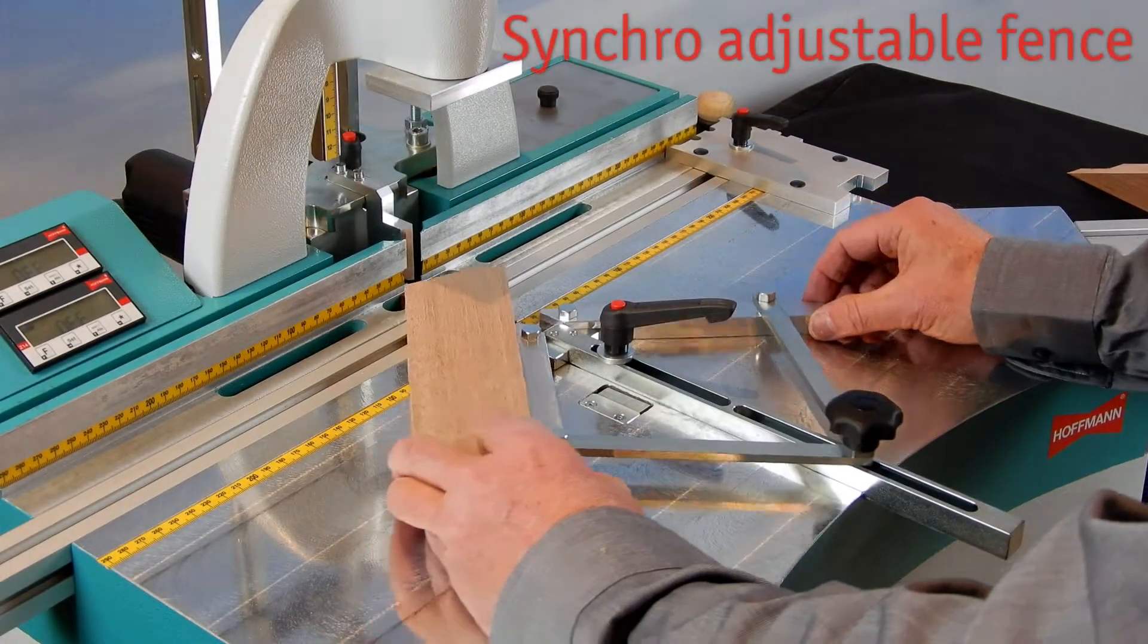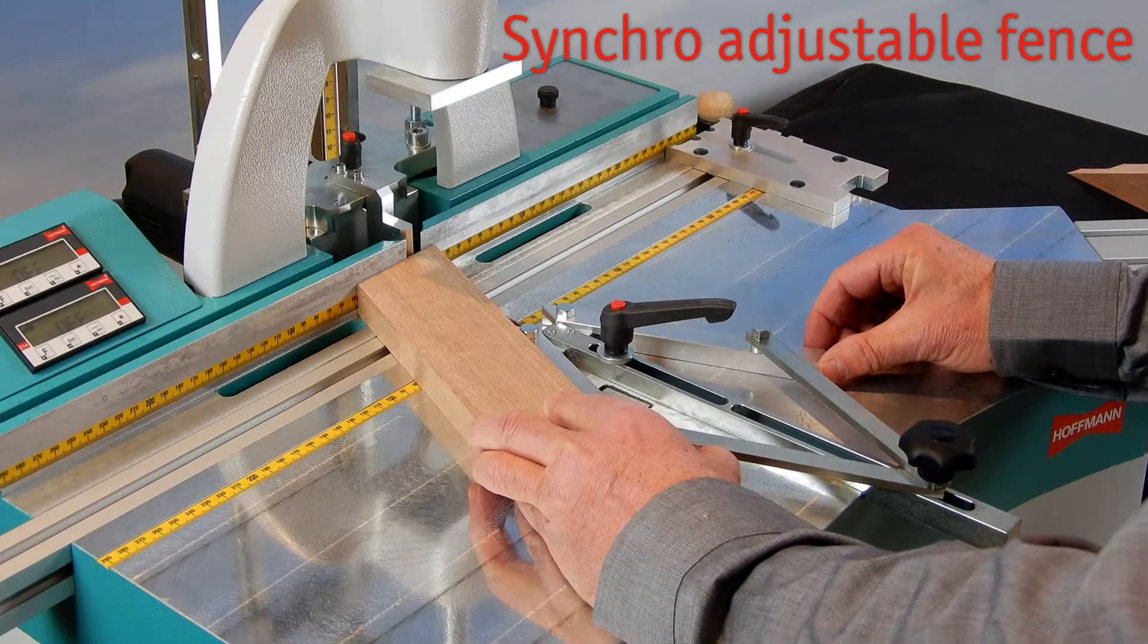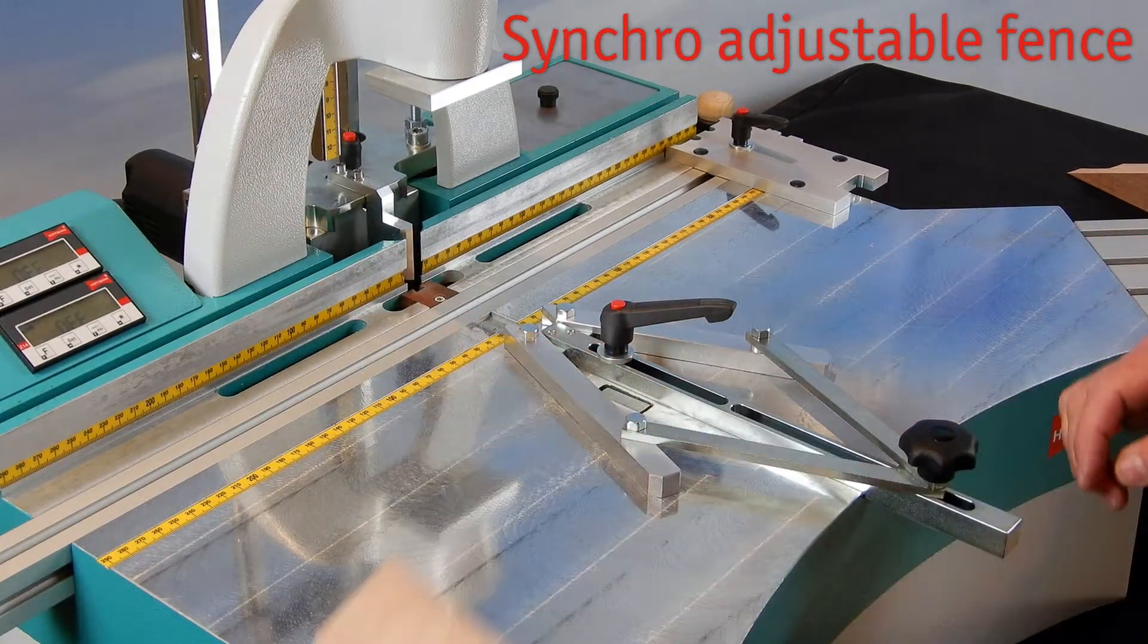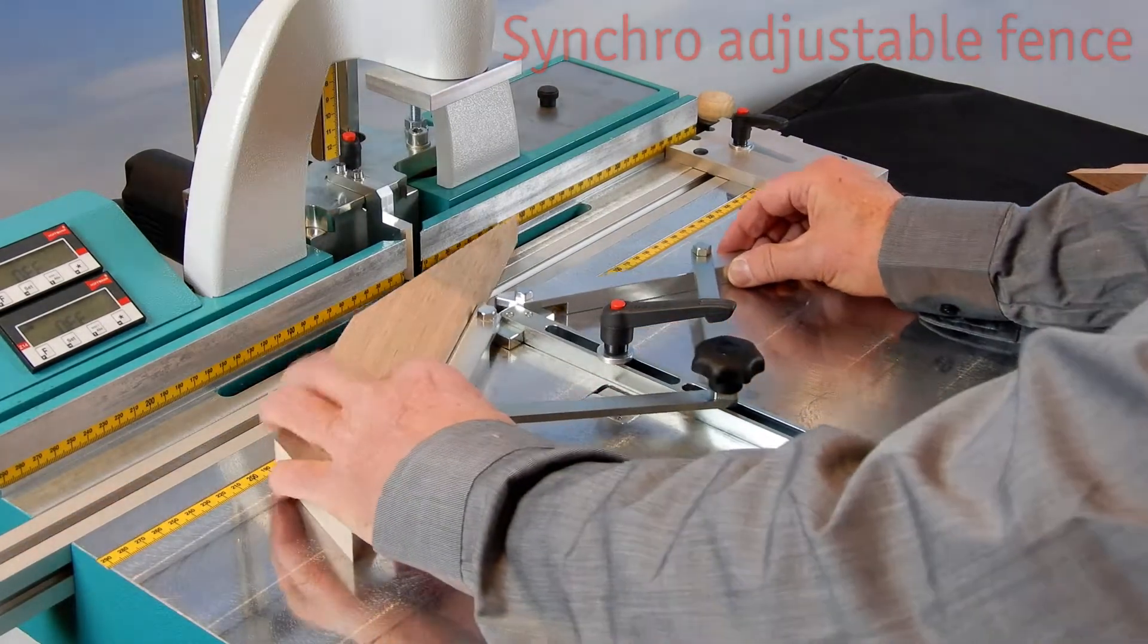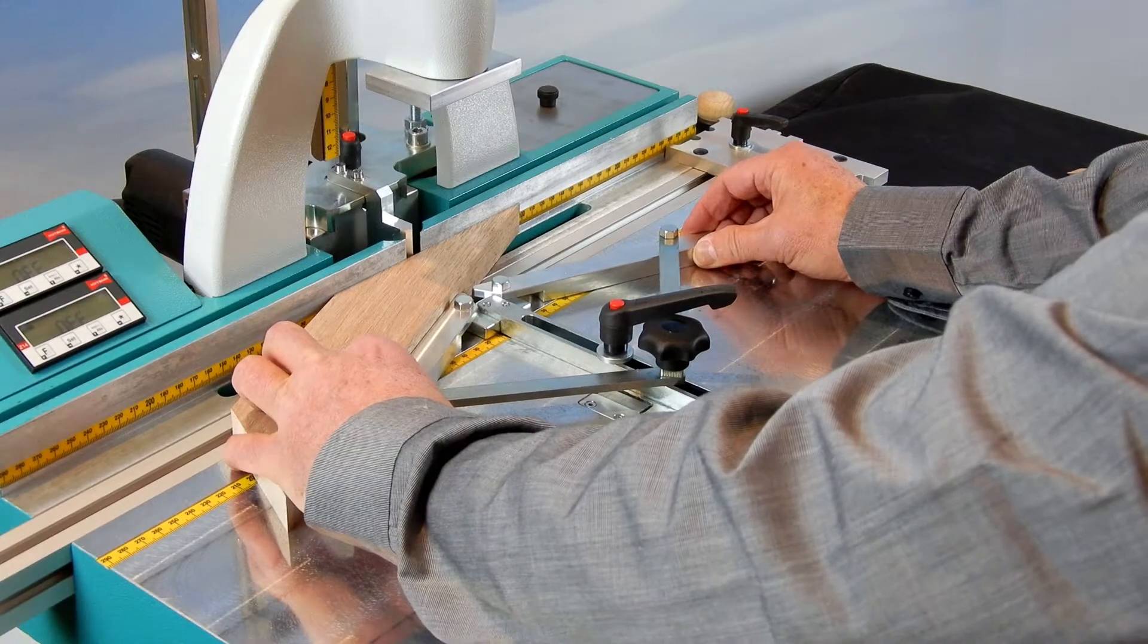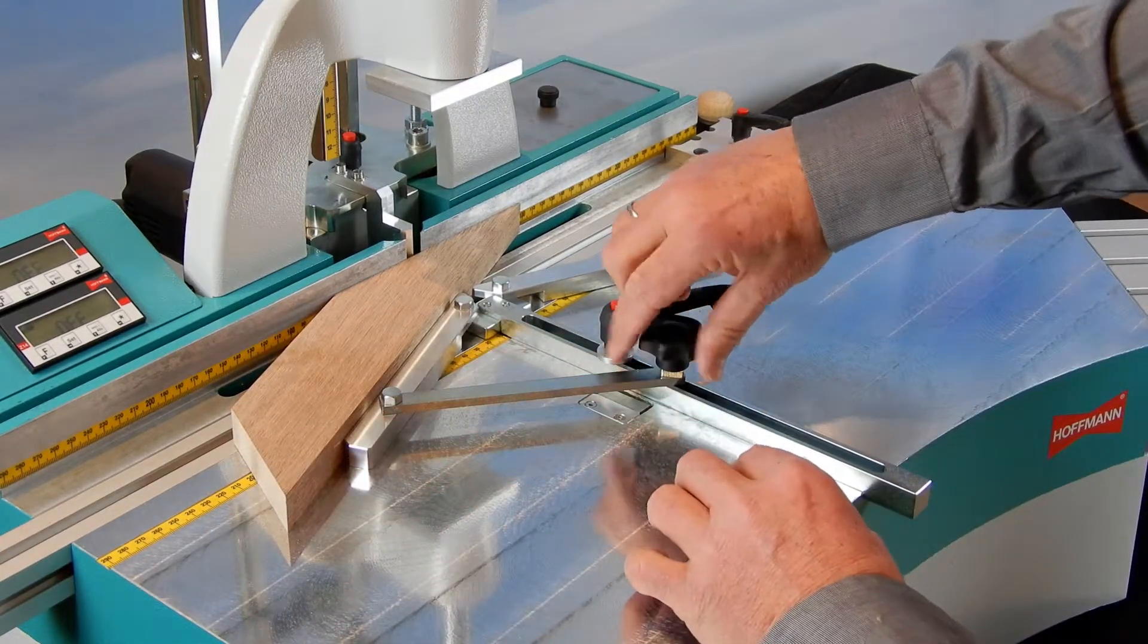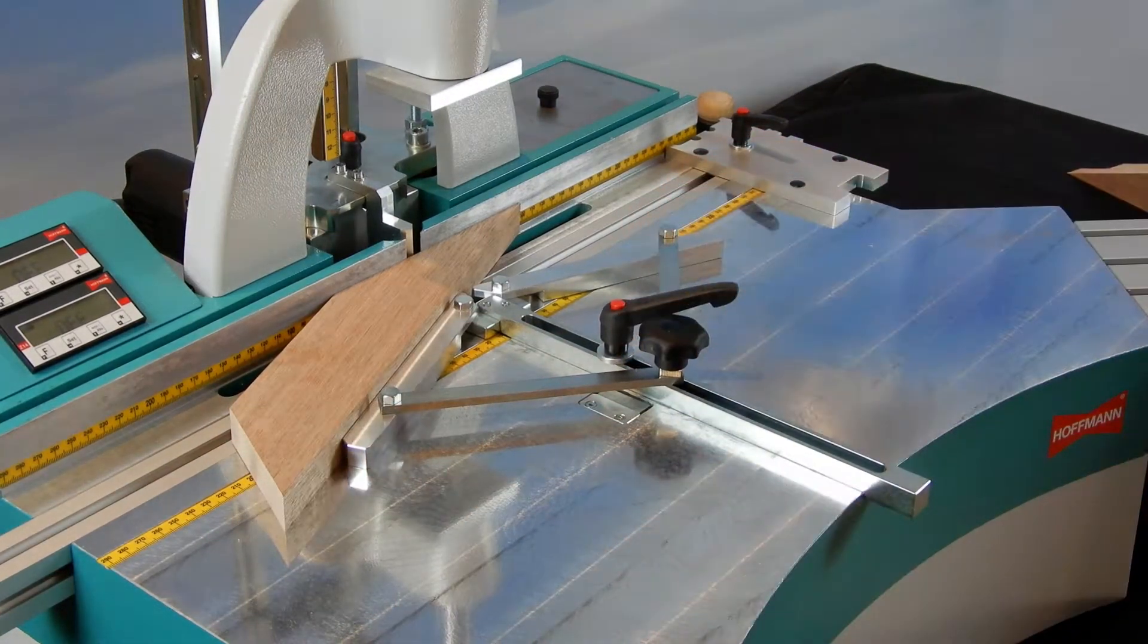Angles from 0 to 90 degrees are infinitely adjustable. The angles are set by using the workpiece lined up with a wing of the synchro fence. By moving the fence, we reach perfect alignment with the rear fence line of the machine.